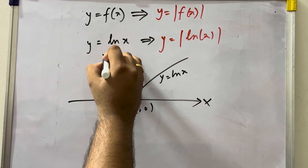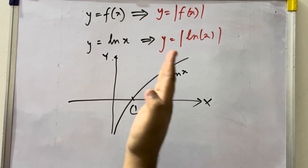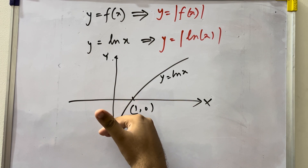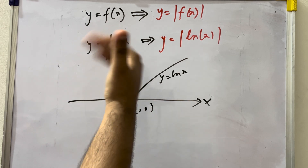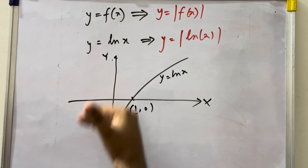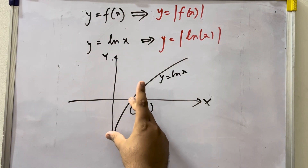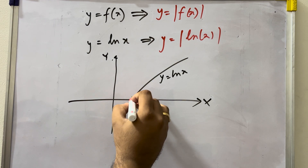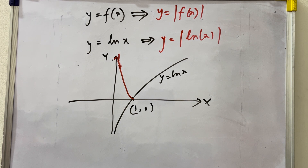To transform y = f(x) to y = |f(x)|, look at which part of the graph lies below the x-axis. Take the mirror image of that part and pull it above the x-axis, because mod always gives a positive value — nothing can lie on the negative y side. The part above x-axis remains; the part below is reflected upward. The y-axis will not be cut; it becomes the asymptote.